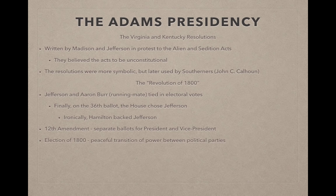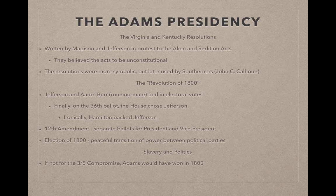Jefferson called the election of 1800 a revolution — a peaceful transition of power between political parties, the first of its kind. Without the three-fifths compromise, Adams would have won in 1800, since the South had more representation due to its slave population. Many feared that abolishing slavery would be too politically divisive, so the issue was left alone — which would only create more problems in the coming years.